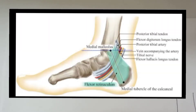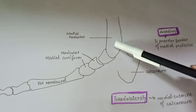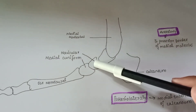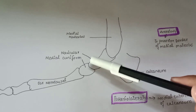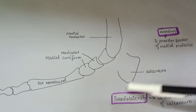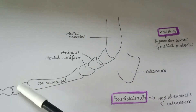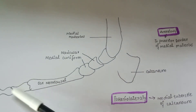The flexor retinaculum of the leg is located on the medial side of the ankle joint. This is the medial aspect of the foot. This is the medial malleolus, this is the navicular, this is the medial cuneiform, this is the calcaneum. These are the tarsal bones. This is the first metatarsal, this is the proximal phalanx, and this is the distal phalanx.